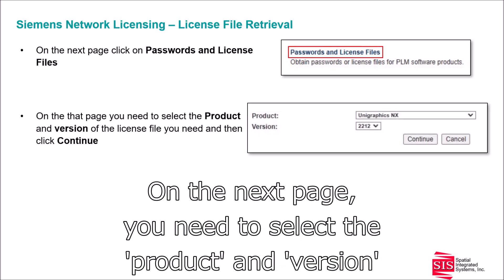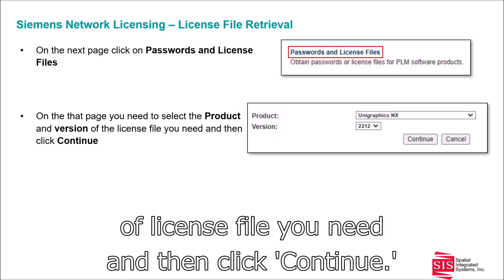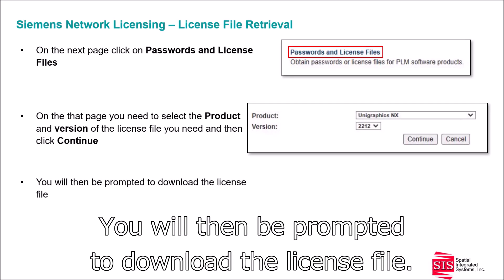On the next page, you need to select the product and version of license file you need and then click Continue. You will then be prompted to download the license file.